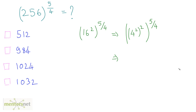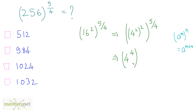Using the law of indices — a raised to m raised to n equals a raised to m times n — this becomes 4 raised to 2 times 2, which is 4, again raised to 5 by 4. That is equivalent to 4 raised to 4 times 5 by 4. The 4 and 4 cancel out, leaving 4 raised to 5.